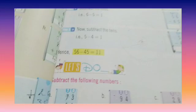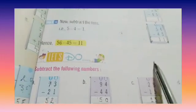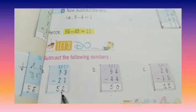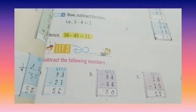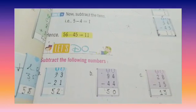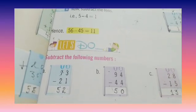So children, take out your pencil. Write today's date on the right hand side, 28. And do question number 1, subtract the following numbers. Part A, Part B, Part C, and Part D with the help of pencil. Complete your book. And we are going to meet you in the next video. Till then, have a great day.